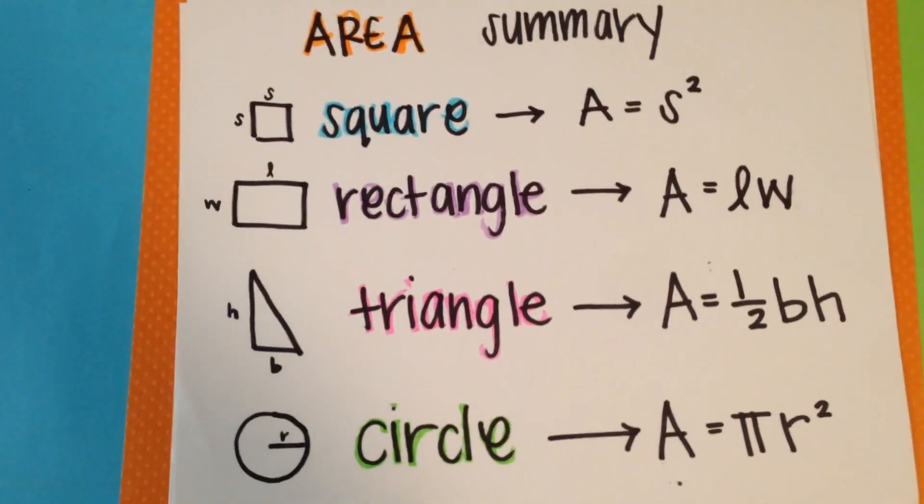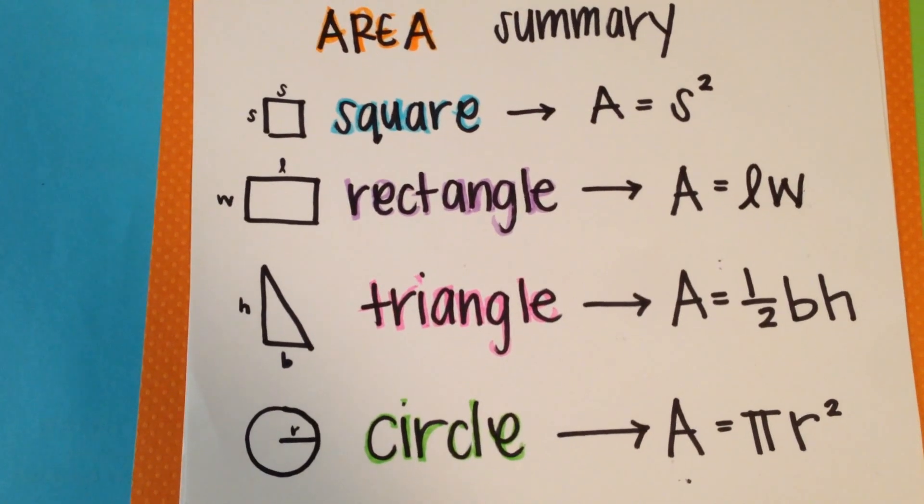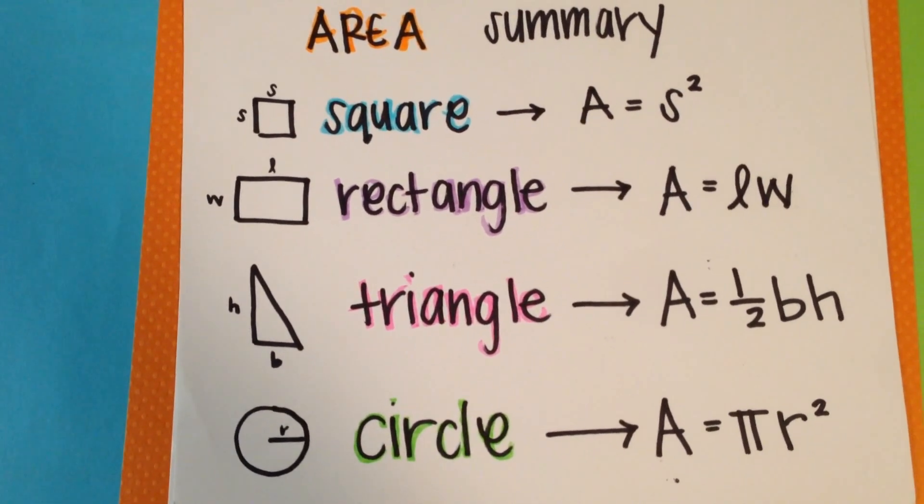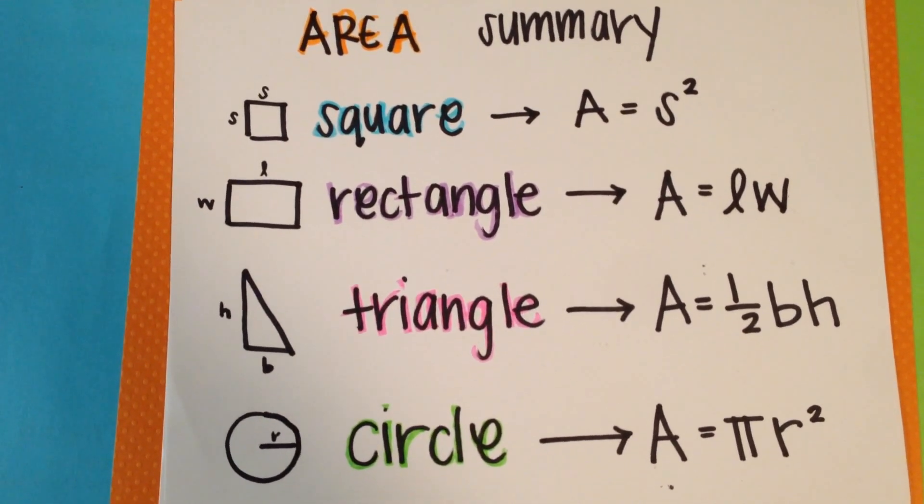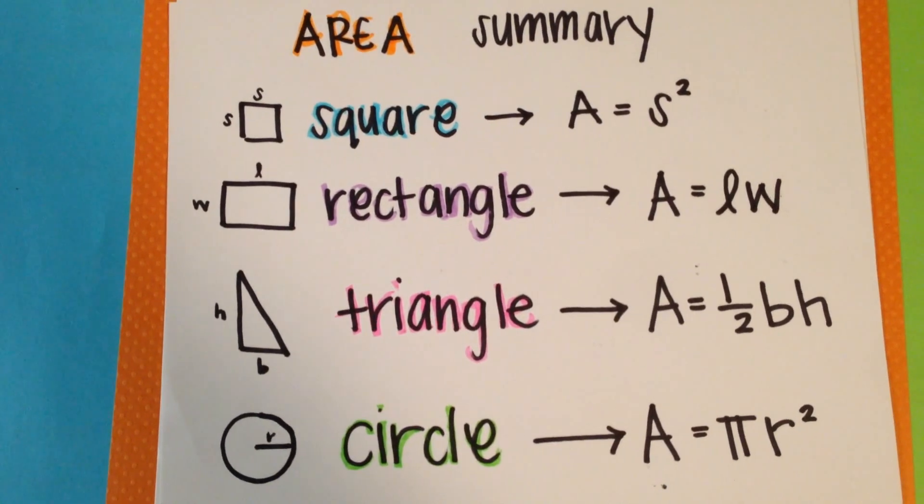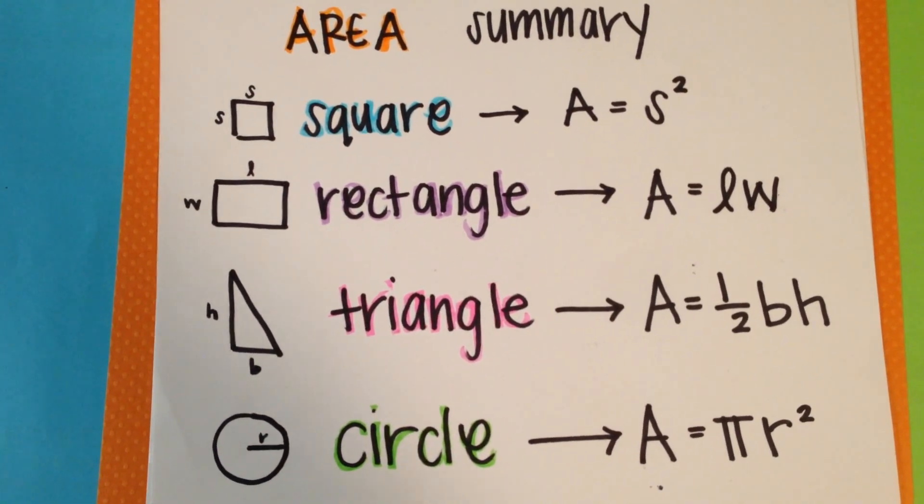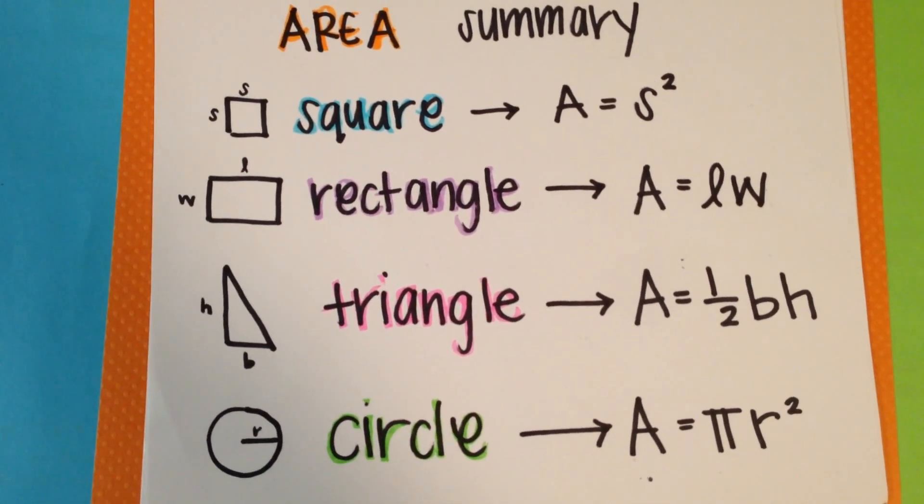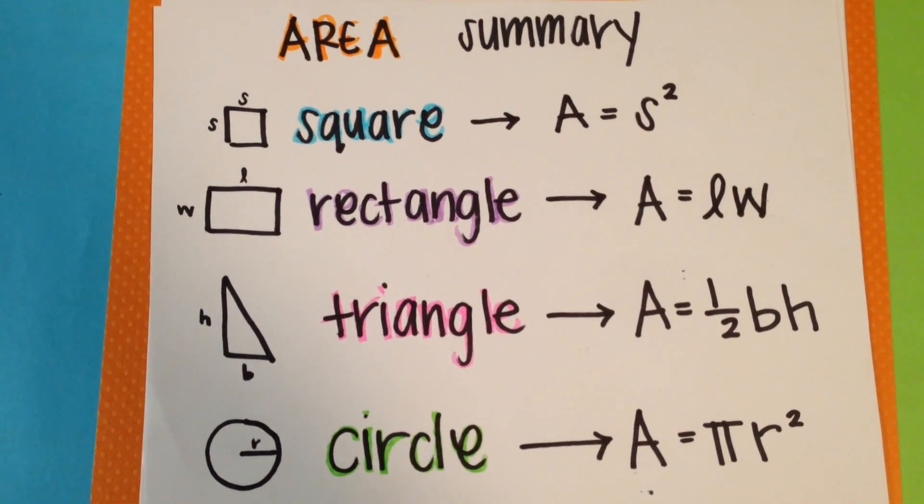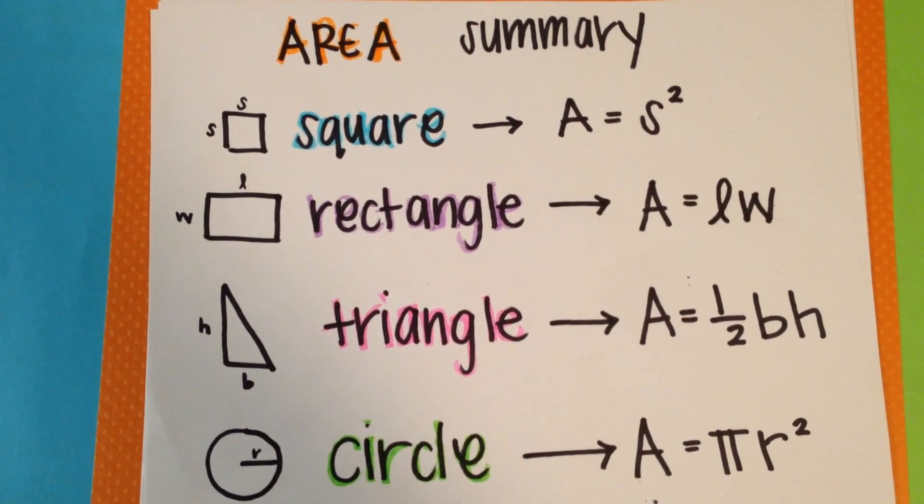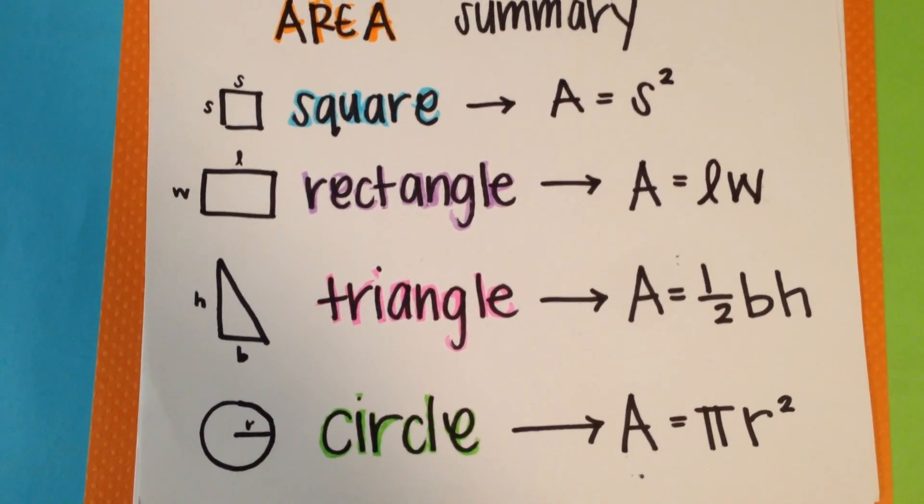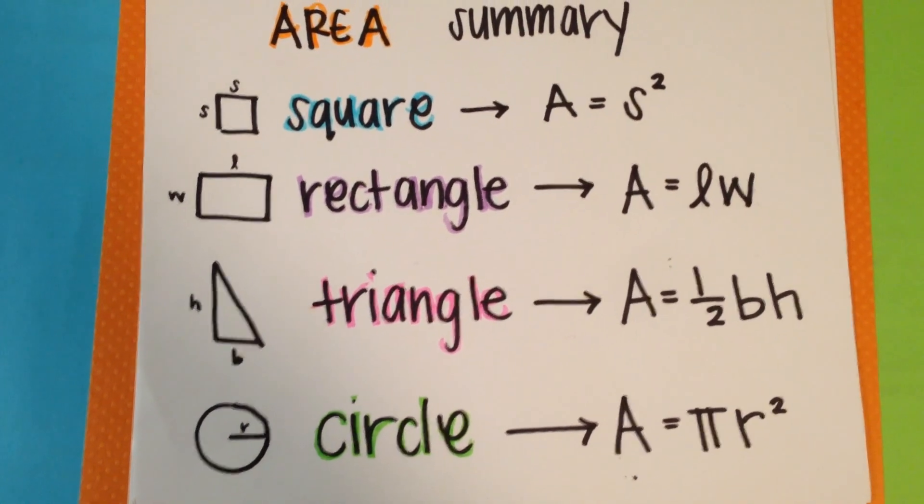Just a summary for area. The area of a square is side squared. The area of a rectangle is length times width. The area of a triangle is 1 half base height. And the area of a circle is pi r squared. Now you can take these areas and find the areas of your own shapes.